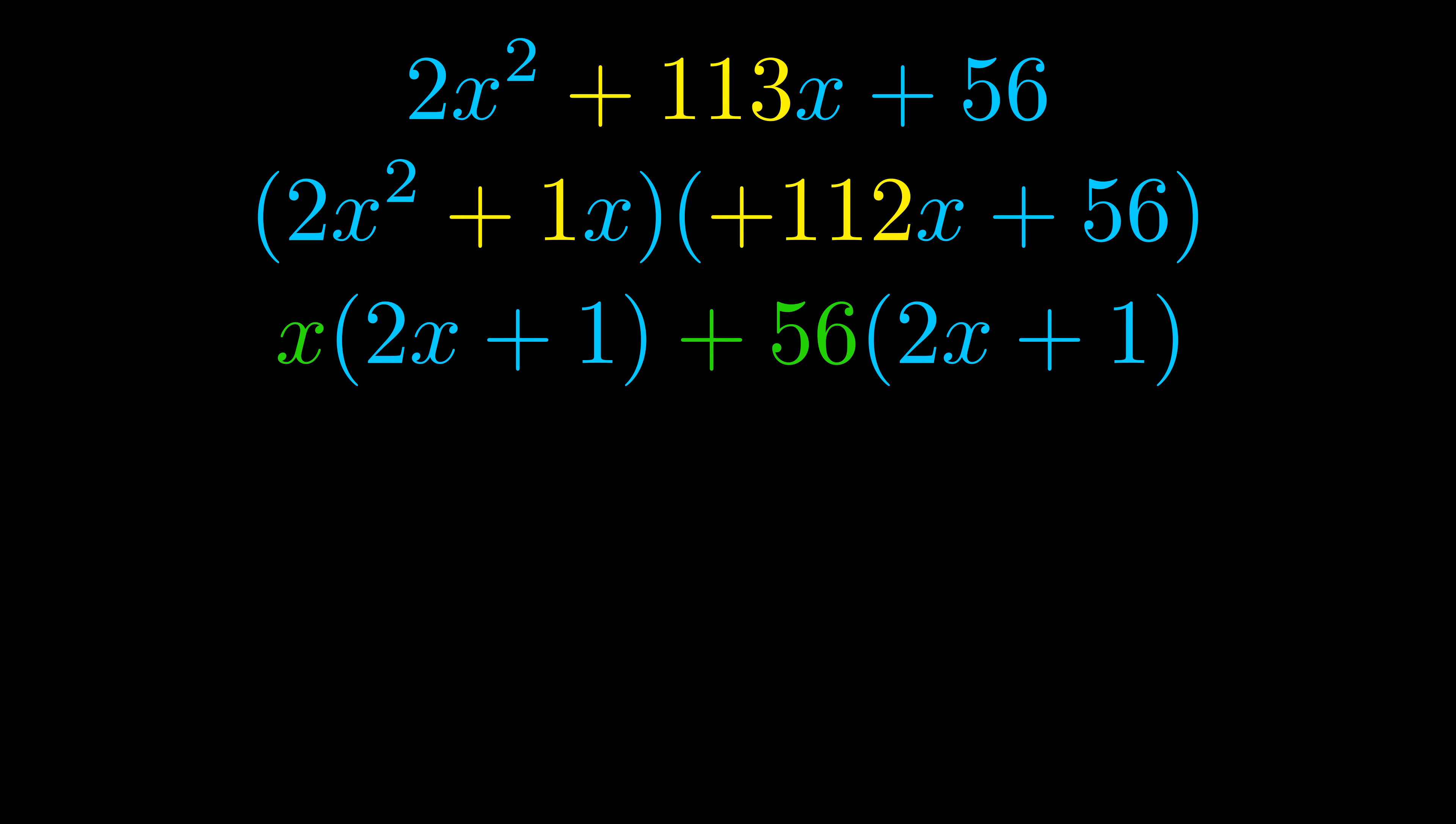Notice also how what remains inside of the parentheses is the same in both cases. The blue values are the same. Those blue values will become one of our factors and we will combine the two green values, the GCFs that we pulled out, to get the other one. And that is our fully factored equation.